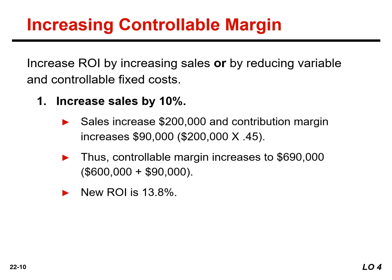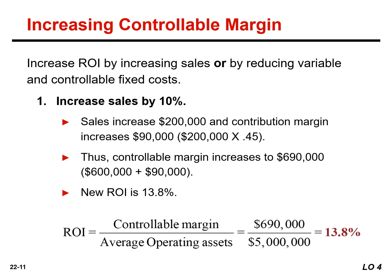Controllable margin can be increased by increasing sales or by reducing variable and controllable fixed costs. If this company increases sales by 10%, sales will increase by $200,000. Assuming no change in the contribution margin percentage of 45%, contribution margin will increase by $90,000. Controllable margin will increase by the same amount because controllable fixed costs will not change, making controllable margin $690,000 and the new ROI 13.8%. An increase in sales benefits both the investment center and the company if it results in new business, but would not benefit the company if the increase was achieved at the expense of other investment centers.